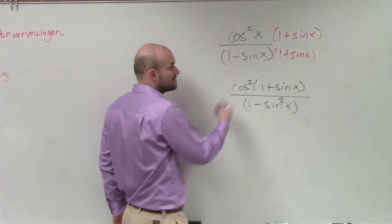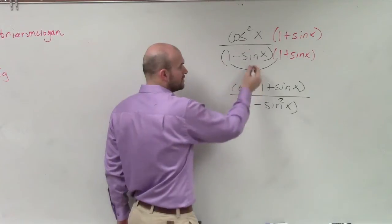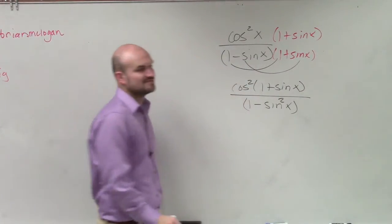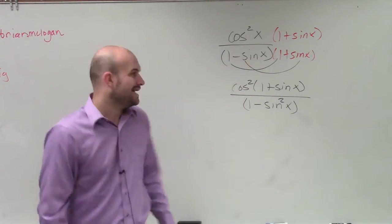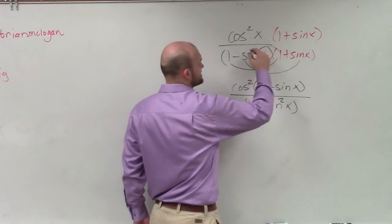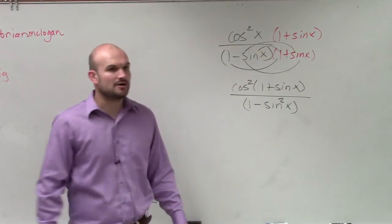Because remember when you multiply a number by its conjugate, this is the difference of two squares. 1 times 1 is 1. Negative sine times positive sine is going to be negative sine squared. And your middle terms are just going to cancel out.